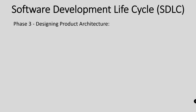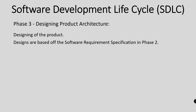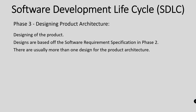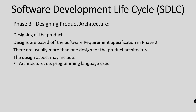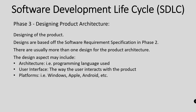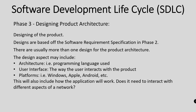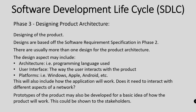Phase 3: designing product architecture. Designs are based off the software requirement specification in phase 2. There are usually more than one design for the product architecture. The design aspect may include architecture such as the programming language used, user interface — the way that the user interacts with the product, what platform the product will run on such as Windows, Apple, or Android, and how the application will work, such as whether it needs to connect to a central server. Prototypes of the product may also be developed and shown to the stakeholders before development.